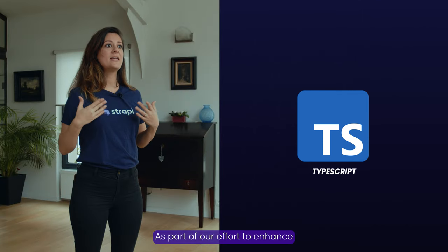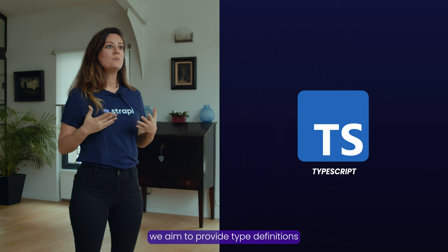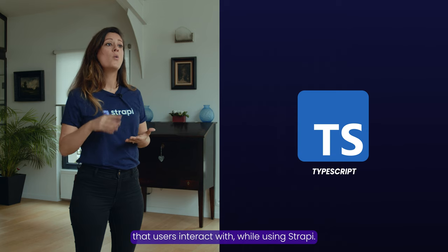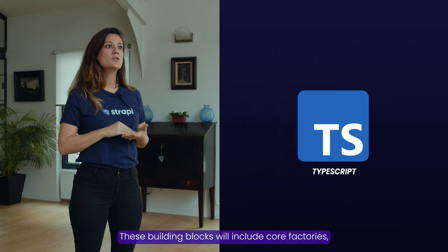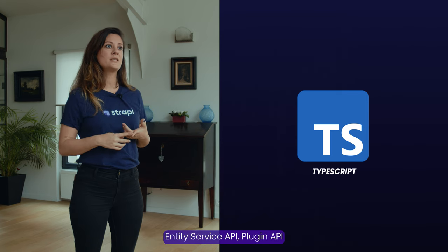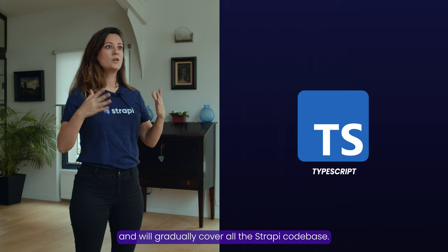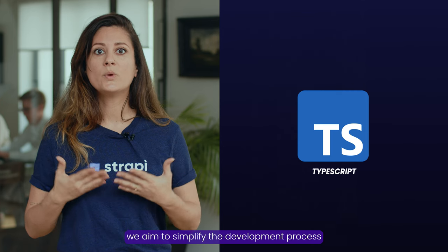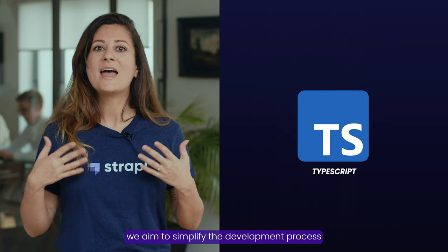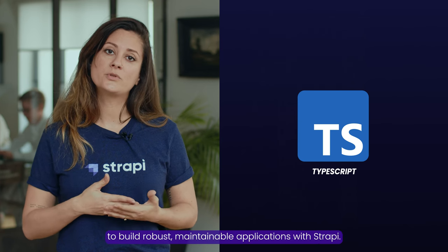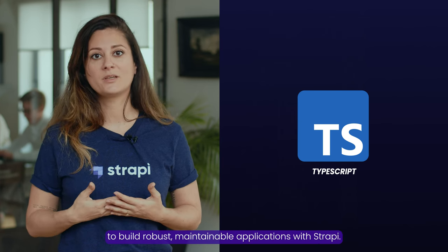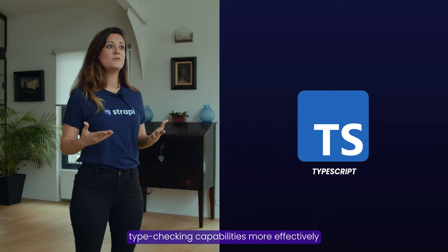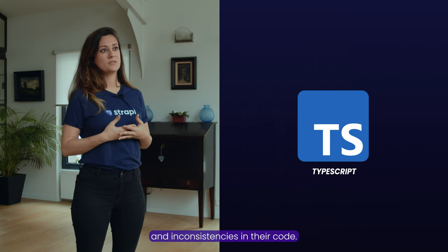As part of our effort to enhance TypeScript support in Strapi, we aim to provide type definitions for the essential building blocks that users interact with while using Strapi. These building blocks will include core factories, entity services API, and plugin API, and will gradually cover all the Strapi codebase. By providing detailed and accurate types for these building blocks, we aim to simplify the development process, enable TypeScript's type-checking capabilities more effectively, and reduce the risk of errors and inconsistencies.